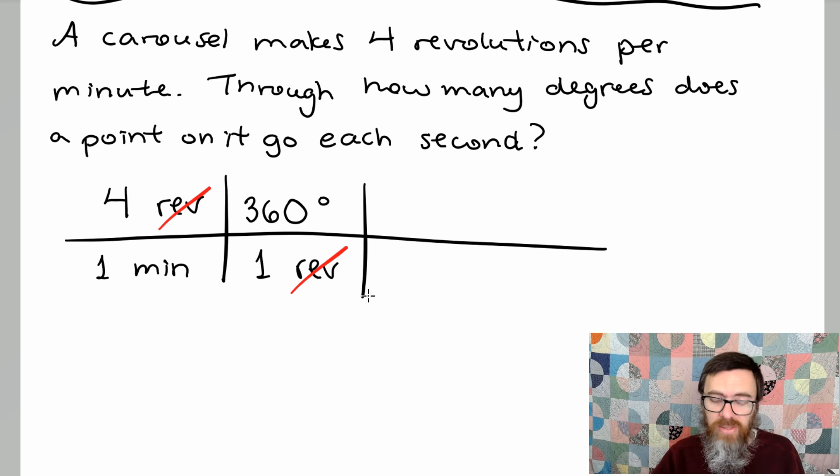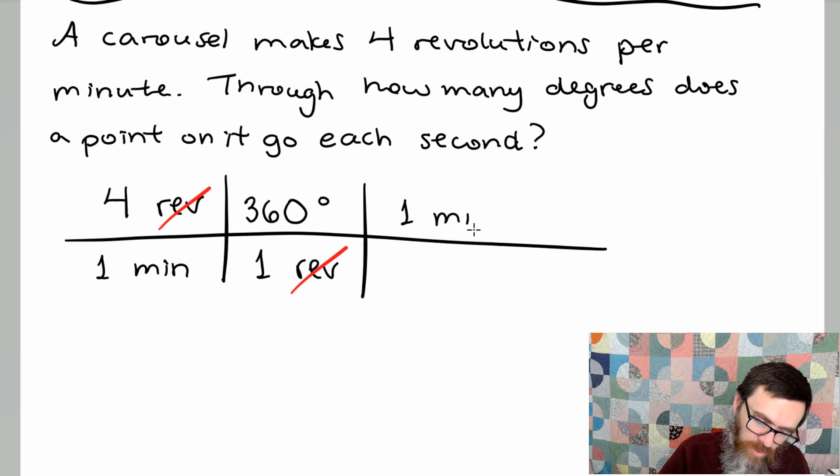And you go from minutes to seconds. So again 60 seconds per one minute. I need the minutes to reduce so I need the minute in the numerator. So one minute to 60 seconds. And now the minutes reduce.